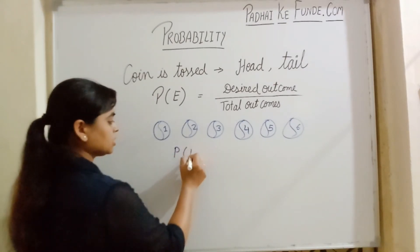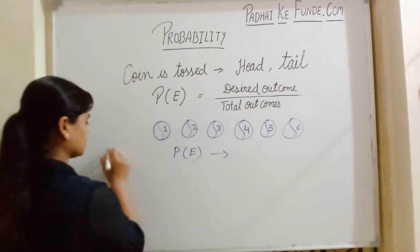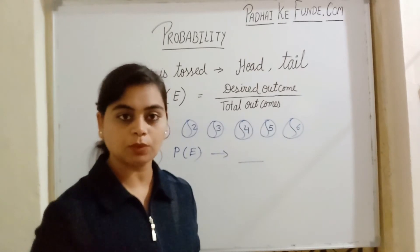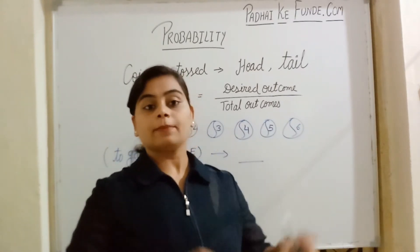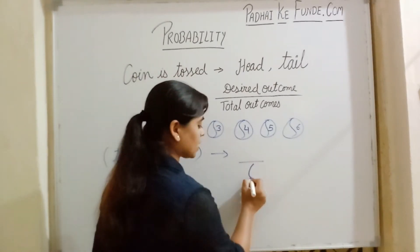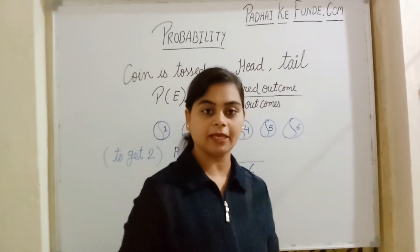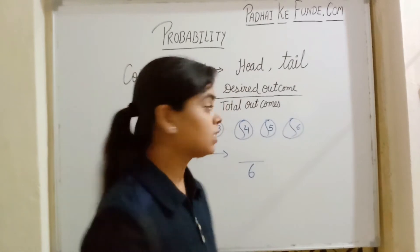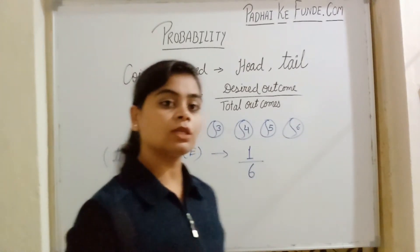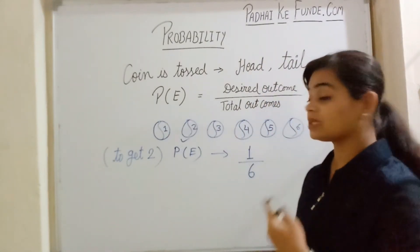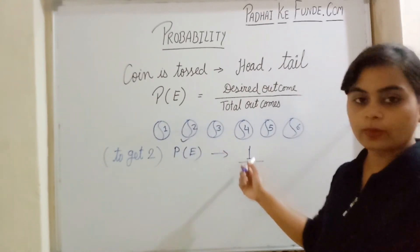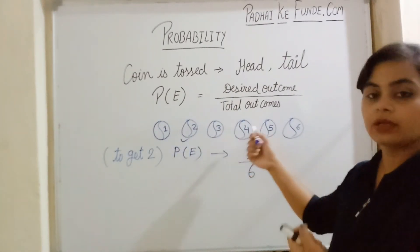In the denominator, the total possible outcomes — the box contains six balls, so total possible outcomes are six. Out of those six, any one can be in my hand, but I want the ball with number two only. How many balls have number two? Only one. So the desired outcome is one, giving us one by six. Similarly, every number appears only once, so the probability to get any specific number — one, two, three, or any — is one by six.